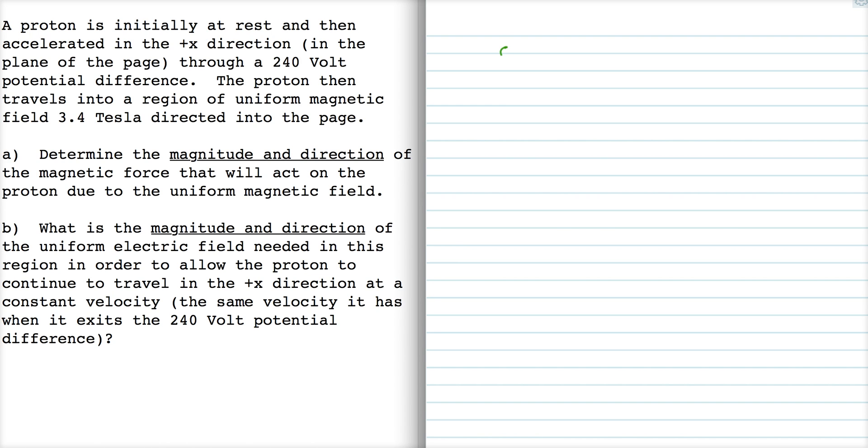We're told that we have a proton here that starts at rest and then is accelerated through a potential difference of 240 volts before entering a region of uniform magnetic field where that external magnetic field is 3.4 tesla directed into the page.